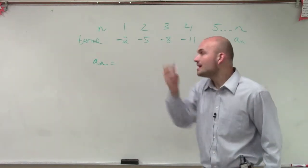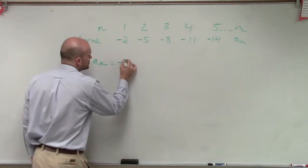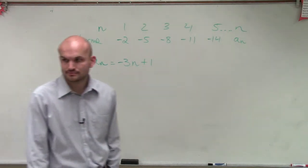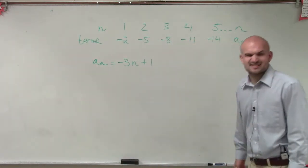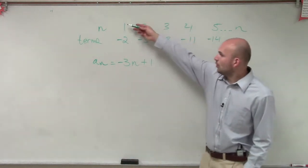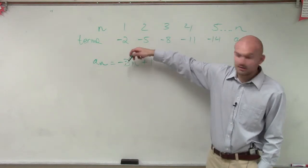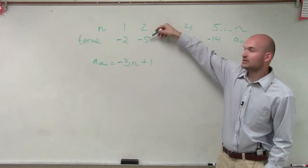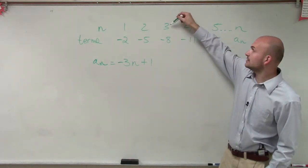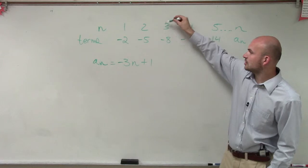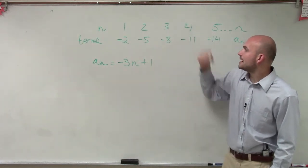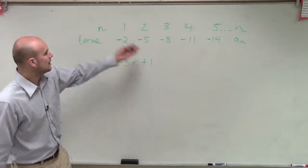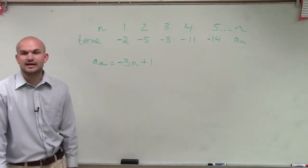Negative 3 plus 1. Yeah, very good. What about if I multiply by negative 3 and then I add 1? So let's take a look at it. Let's see if that works, right? 1 times negative 3 is negative 3 plus 1 is negative 2. 2 times negative 3 is negative 6 plus 1 is negative 5. 3 times negative 3 is negative 9 plus 1 is negative 8. And negative 3 times 4 is negative 12 plus 1 is negative 11. 3 times negative 5 is negative 15 plus 1 is negative 14.